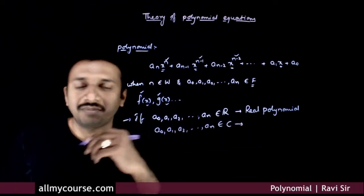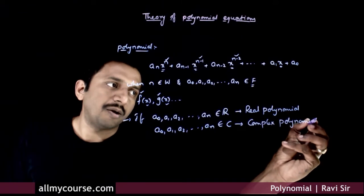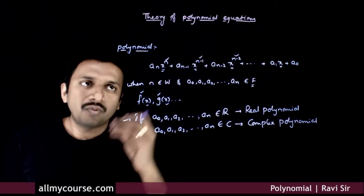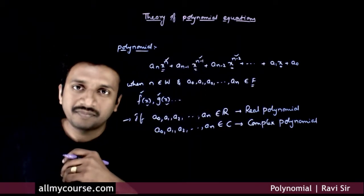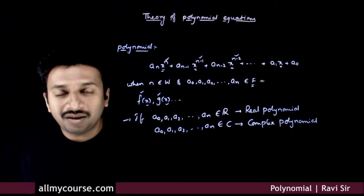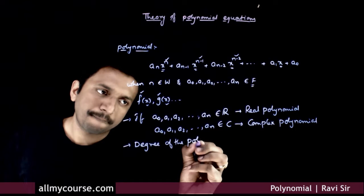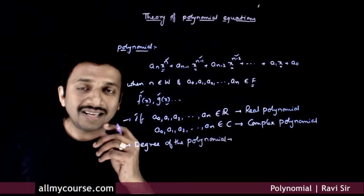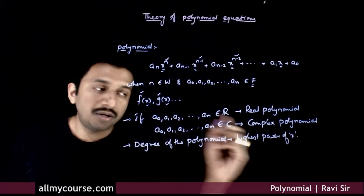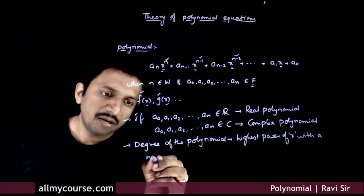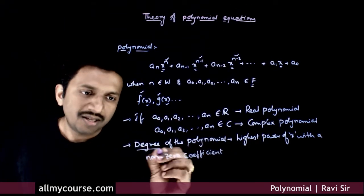So if a_0, a_1, a_2, up to a_n belong to the set of complex numbers, then the polynomial is called a complex polynomial. You can have these coefficients in any set — whatever set the coefficients belong to, we say this is a polynomial over that set. The highest power of x present in the polynomial with a non-zero coefficient is called the degree of the polynomial.